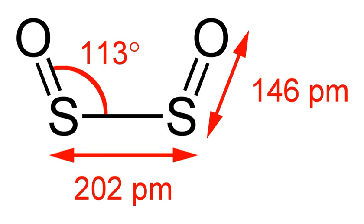Disulfur dioxide adopts a cis planar structure with C2V symmetry. The SO bond length is 145.8 picometers, shorter than in sulfur monoxide. The SS bond length is 202.45 picometers and the OSS angle is 112.7 degrees.